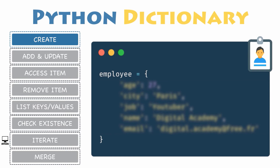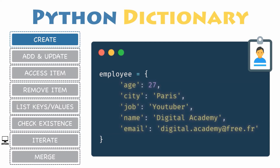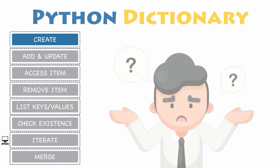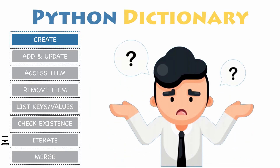Here is an example in which you want to store an employee record. First, let's declare an empty dictionary using curly braces. Eventually, you will add all of the personal information about the employee so you can store its information and then access it later. As a result, you will get a dictionary with the age, city, job, name, and email address of an employee.